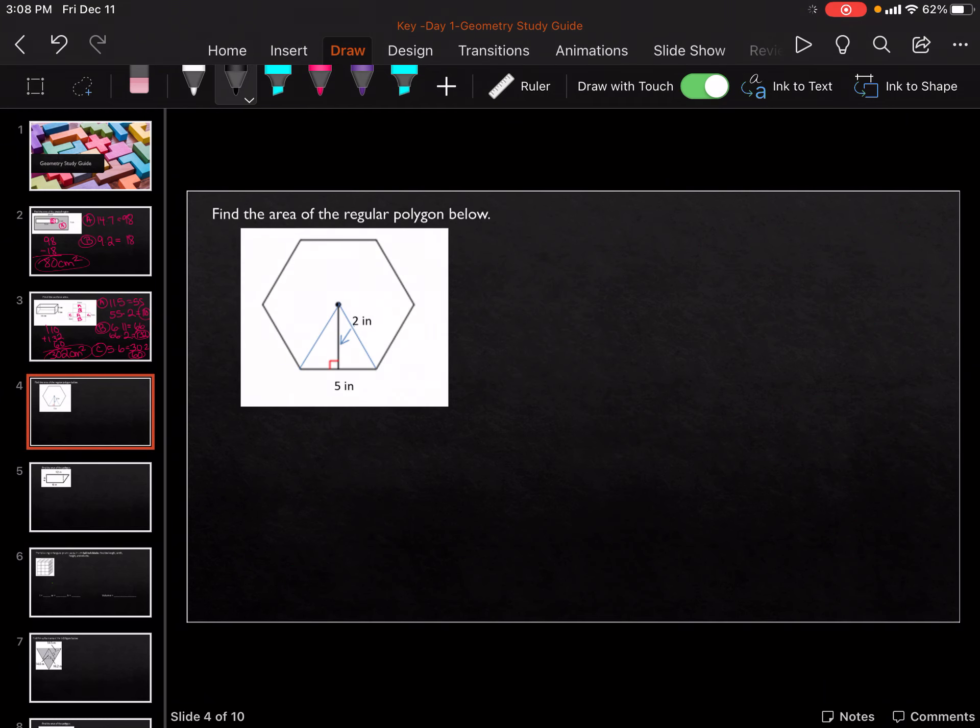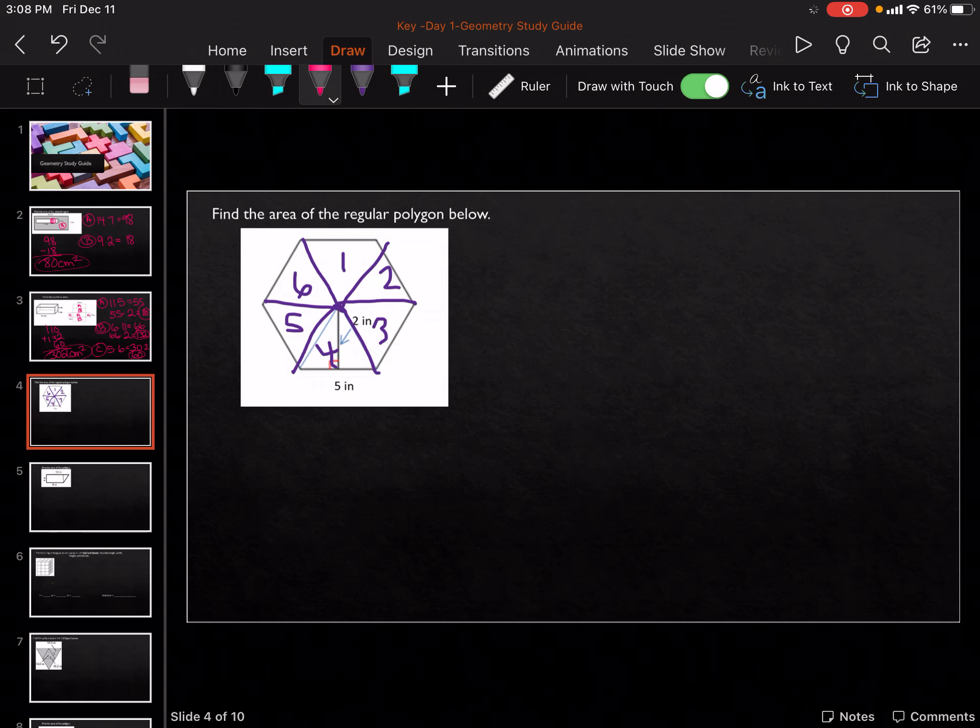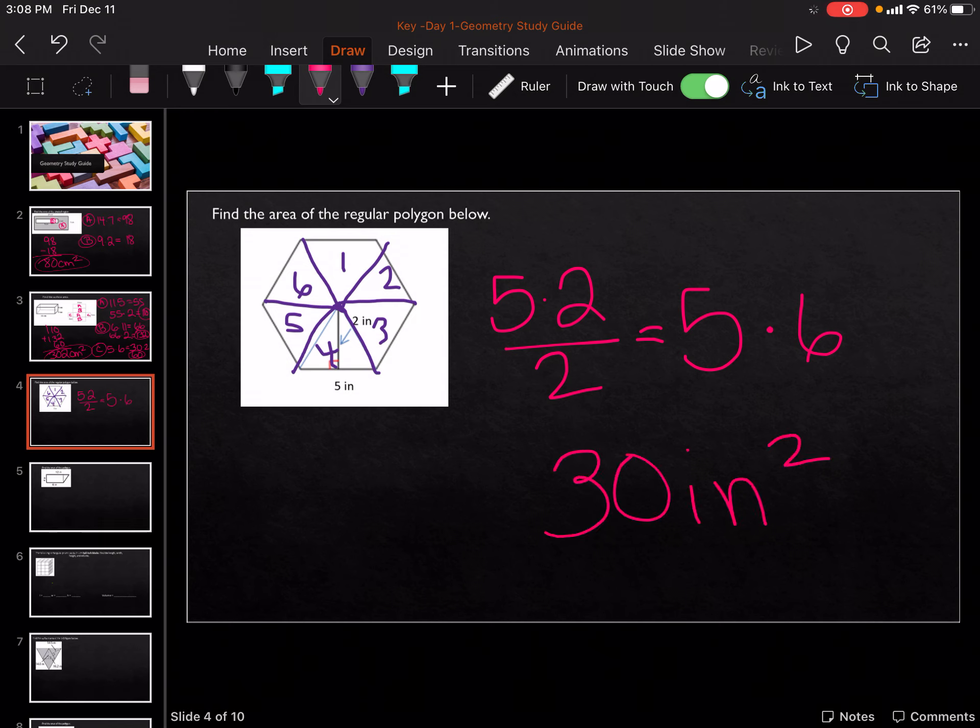For this one, we're going to cut the shape up into triangles. Remember, the number of triangles is the same as the sides. So 1, 2, 3, 4, that's one triangle, 5, 6. So it is going to be 5 times 2 divided by 2, which gets me 5, times 6, because there's 6 of them. And then 5 times 6 gets me 30 inches squared. Don't forget to divide it by 2, and we're multiplying it by 6, because there's 6 triangles.